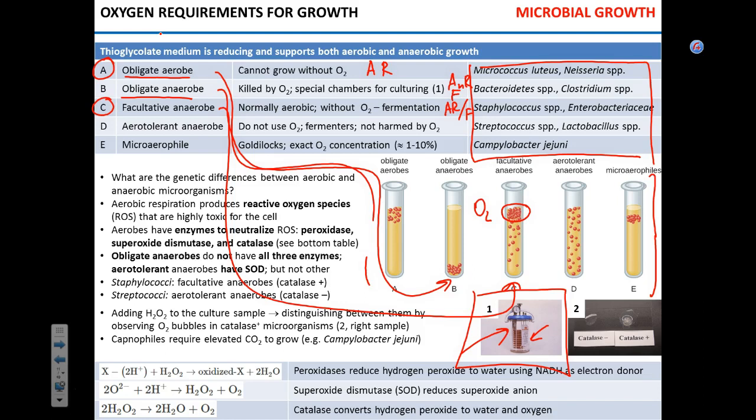The fourth type is aerotolerant anaerobes. They do not need oxygen but can survive in its presence. They most likely use anaerobic metabolism — the majority are fermenters rather than using anaerobic respiration.